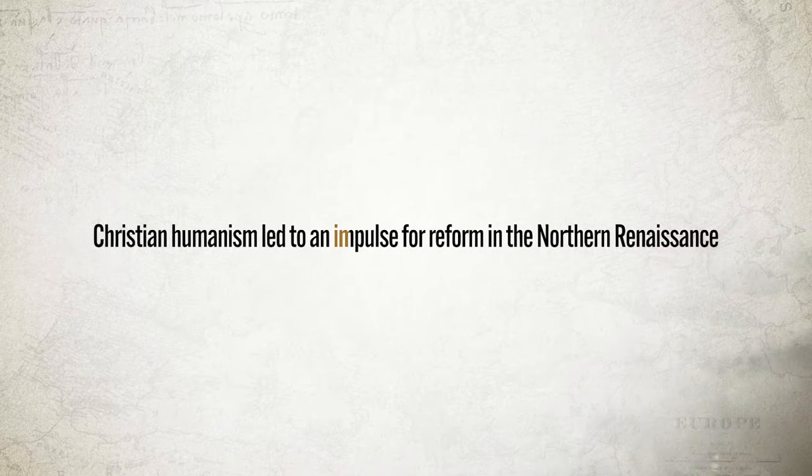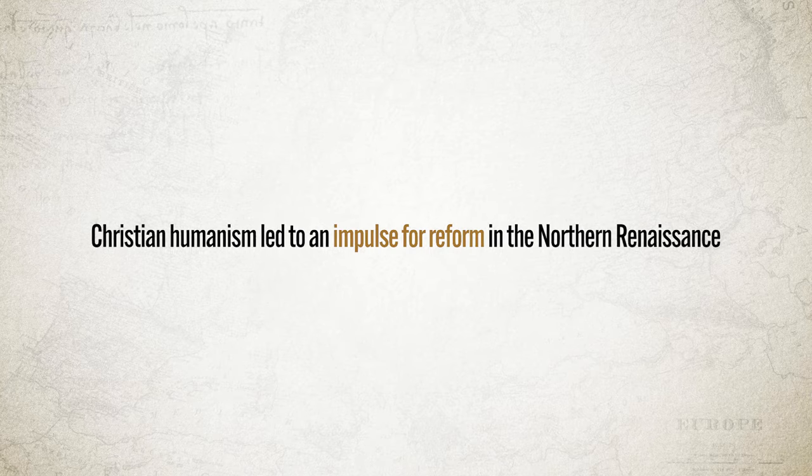Now, astute students will immediately grow a question mark over their heads: doesn't humanism teach that human beings had unlimited potential, and isn't that not what Christianity teaches? Well done, my dear pupil — you are correct. So the way Christian humanism worked out was to teach that human beings were actually far more capable than previously believed, and if we could just get a healthy dose of religious enthusiasm into them, that would lead to efforts to reform society from a Christian posture. So Christian humanism led to an impulse for reform in the Northern Renaissance.